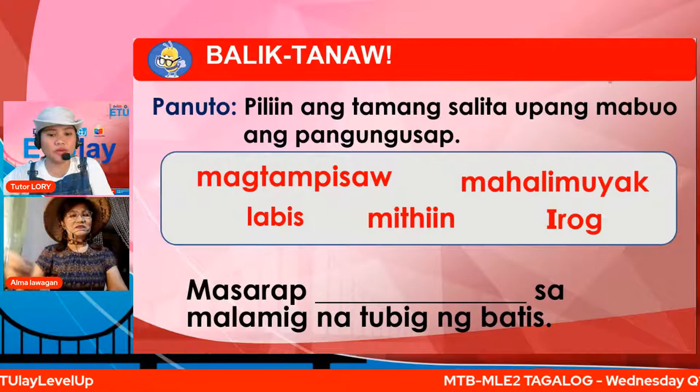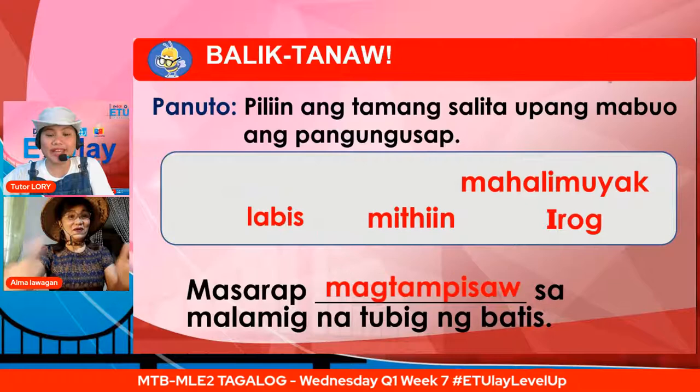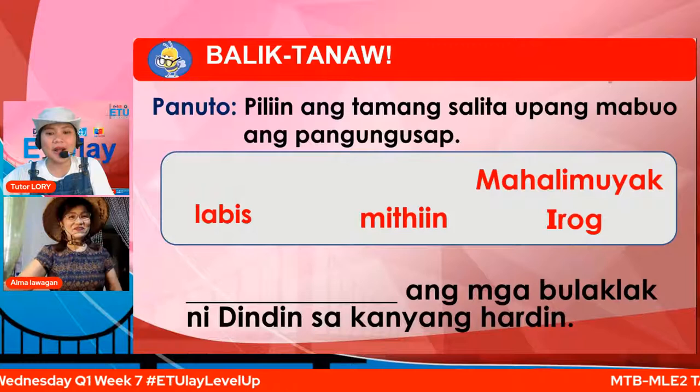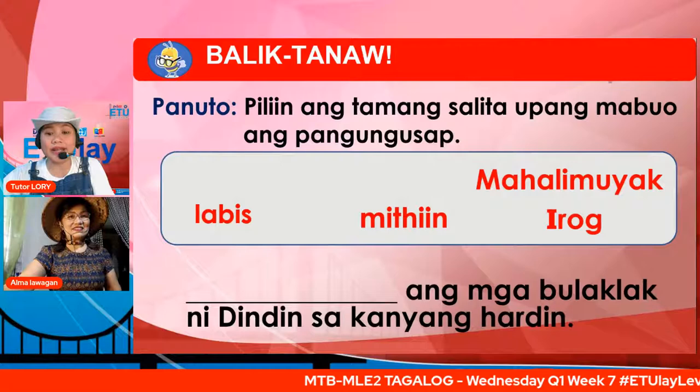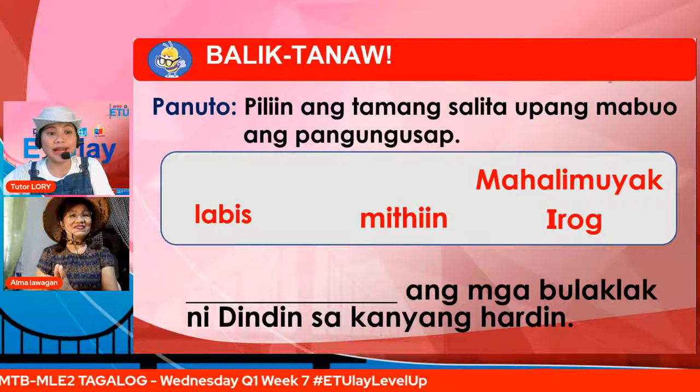Bilang dalawa — patlang ang mga bulaklak ni Dindin sa kanyang hardin. Ano kaya ang naglalarawan sa mga bulaklak ni Dindin? Mahalimuyak, labis, miti, o irog? Kung ang iyong sagot ay mahalimuyak, tama, napakahusay mo!